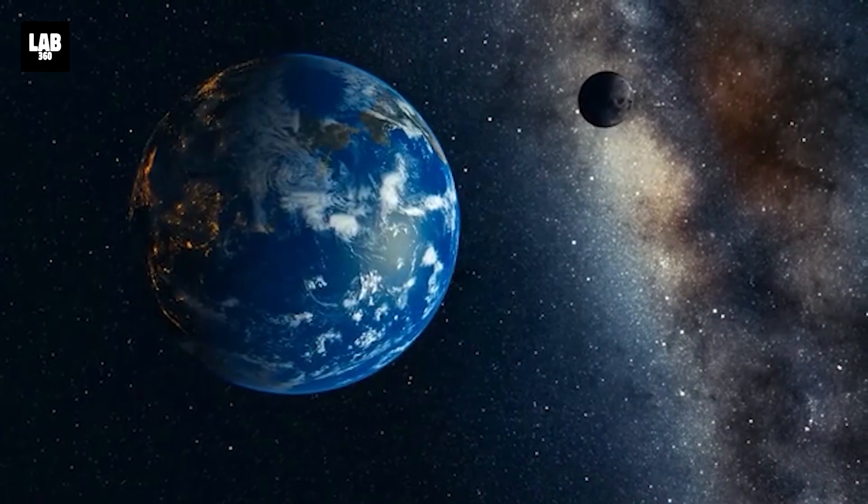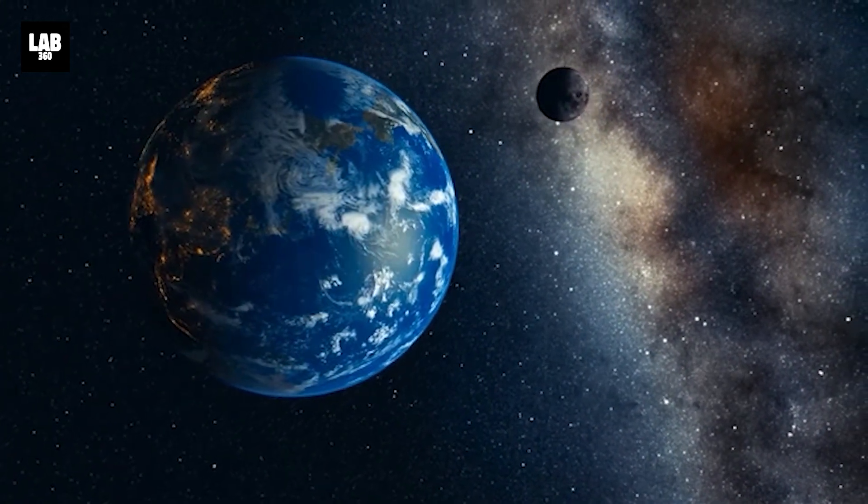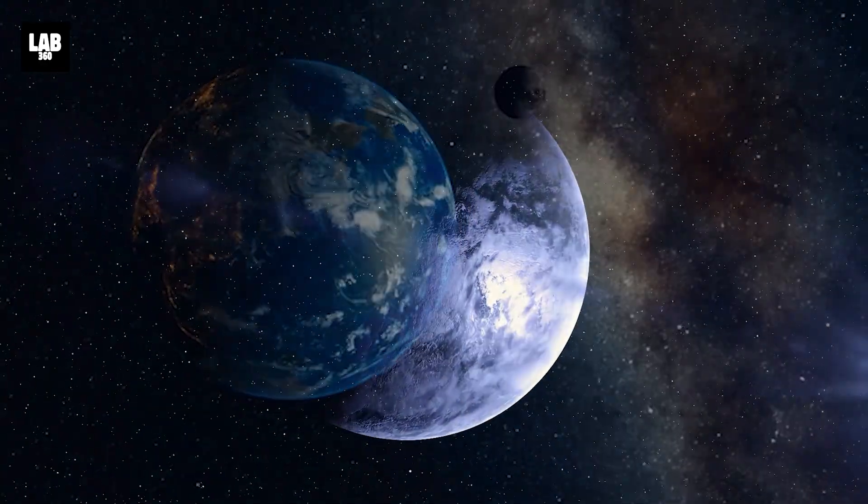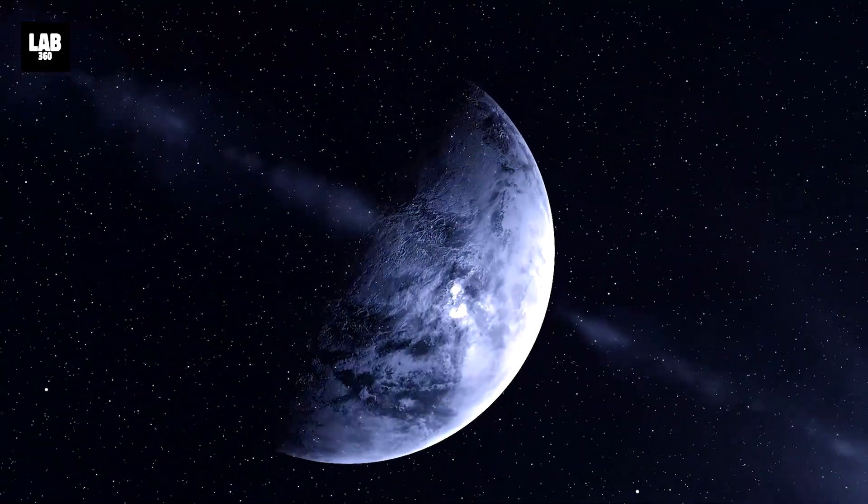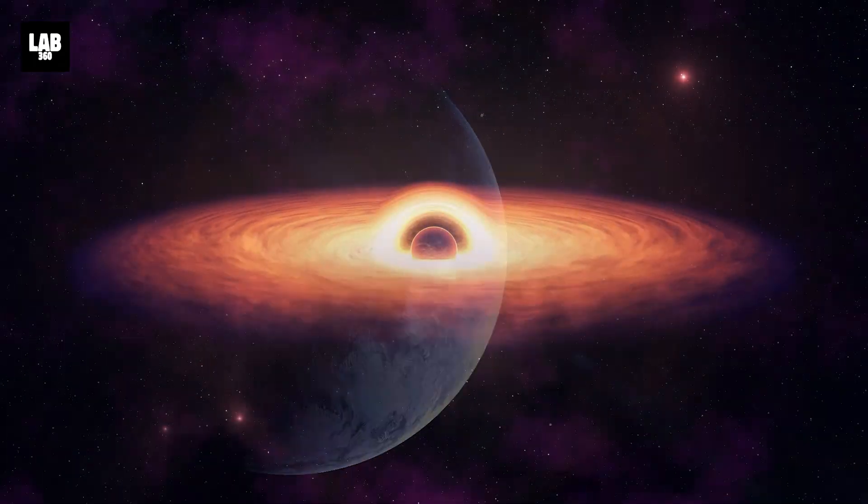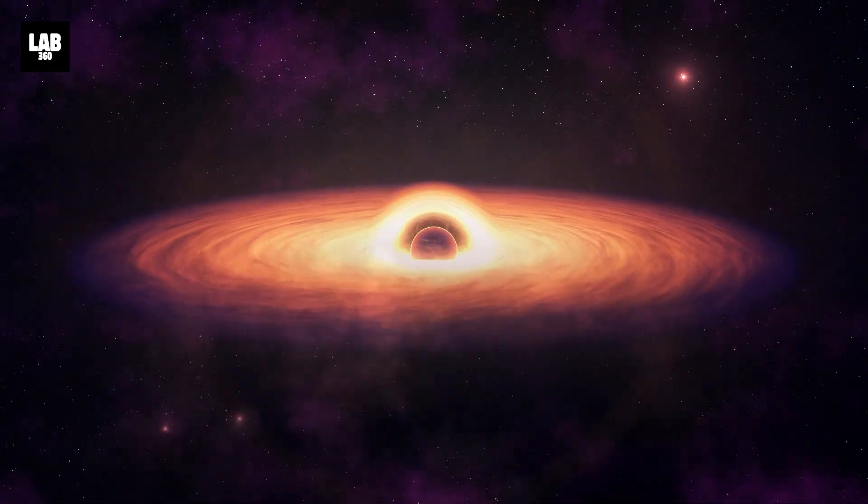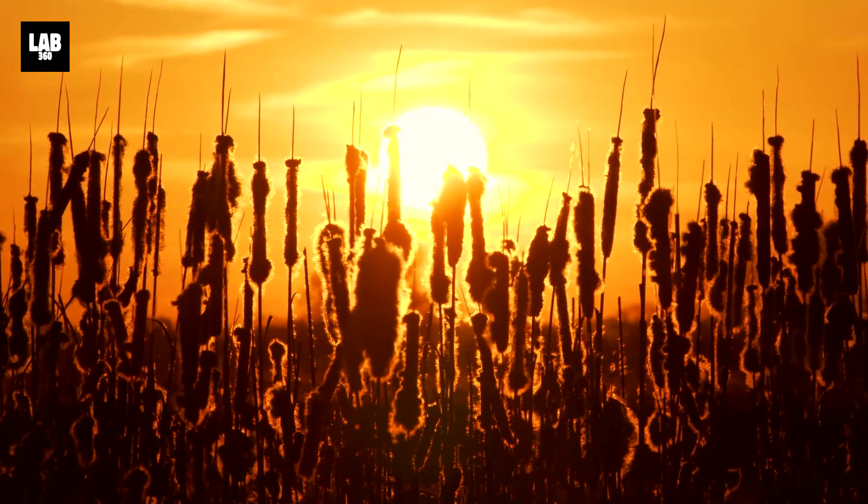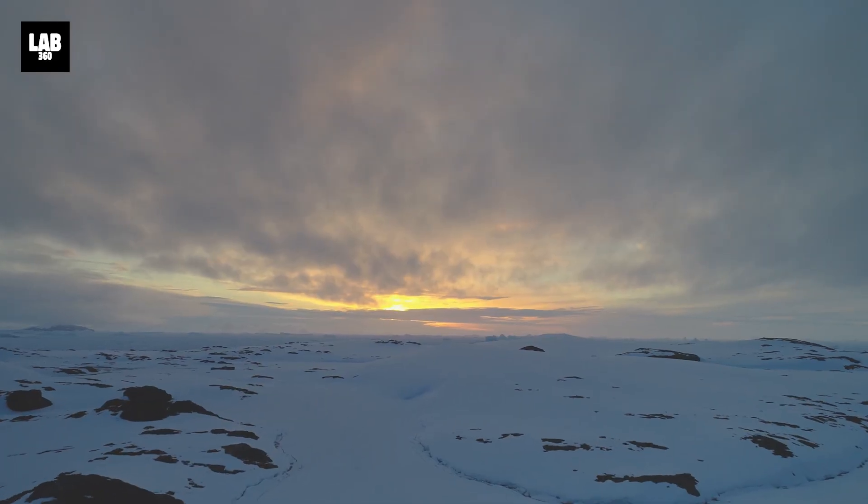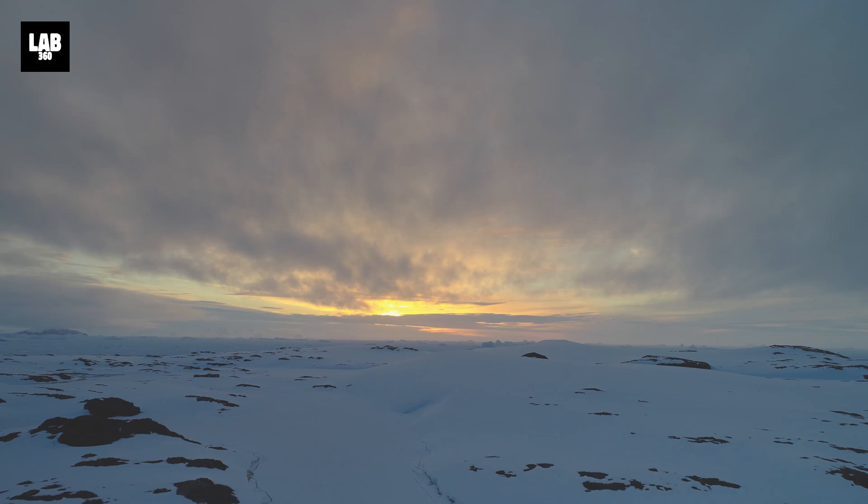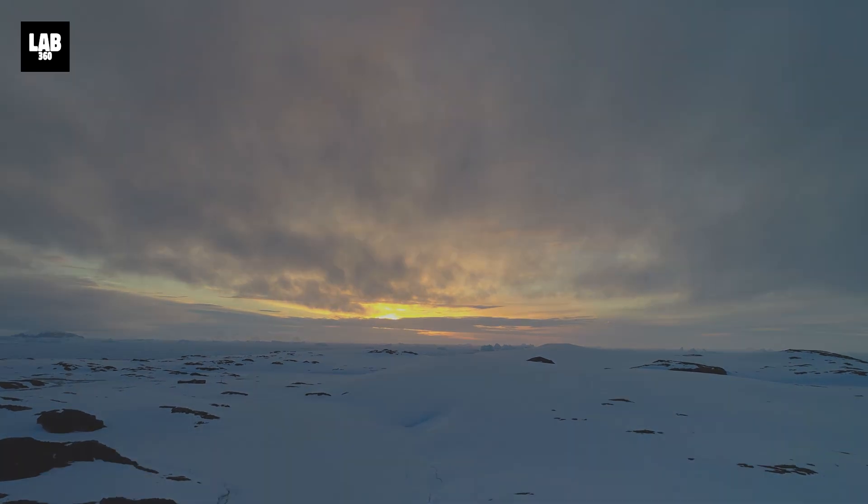While the planets would not be affected by the Sun's collapse in terms of their orbits, they would be drastically affected by the loss of light and heat. The Sun, as a black hole, would no longer emit the vast quantities of light and heat that sustain life on Earth. The lack of sunlight would quickly plunge the Earth into darkness, with temperatures rapidly dropping.